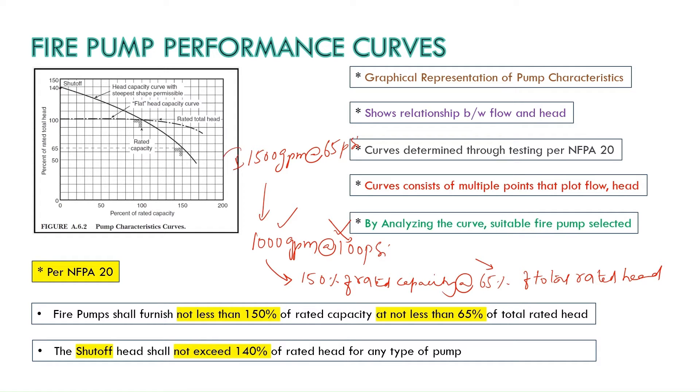So this is the first criteria we need to satisfy to comply with NFPA 20 requirement and the second criteria is the shutoff head. Shutoff head shall not be more than 140% of the rated head for any type of pump. So we have our total rated as 100 PSI so our shut off head shall be less than 100 into 140% which will be around 140 PSI. This might vary based on the pump manufacturer curve however the pump shall not produce the shut off head more than 140% at zero flow condition.